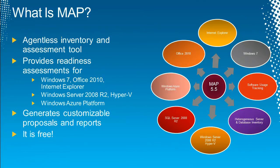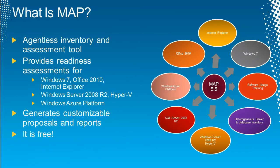MAP is free — you can download it from microsoft.com/map. Customers and partners can all download and use it. There are some dependencies: it requires SQL Express, which is installed during setup and can be downloaded automatically. The current version 5.5 has a dependency on Office 2007 or Office 2010 to generate reports and proposals. In the new release coming soon, we've removed the Office dependency, especially for people running MAP in a data center where Office may not be installed. The overall MAP download is around 14 megabytes.